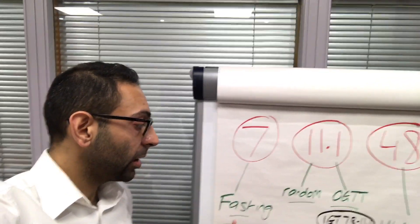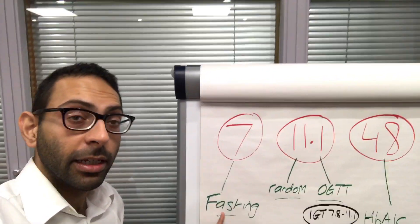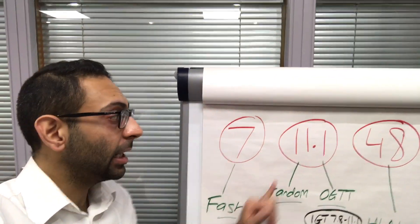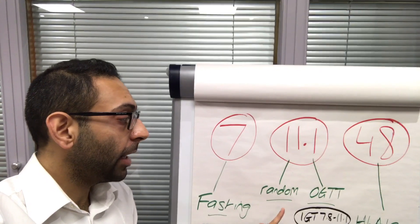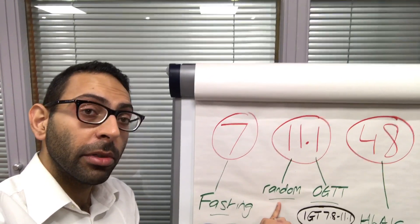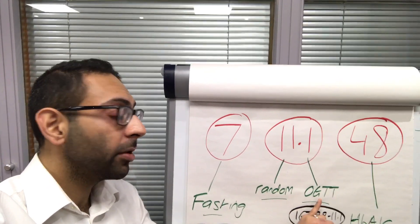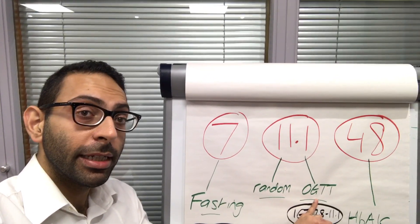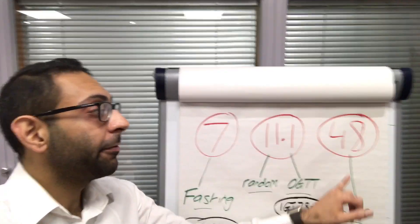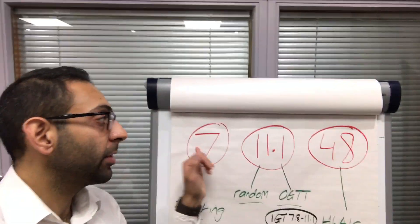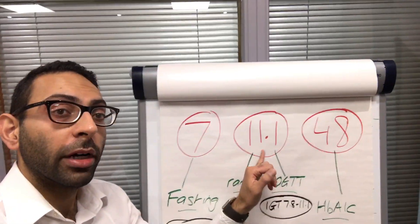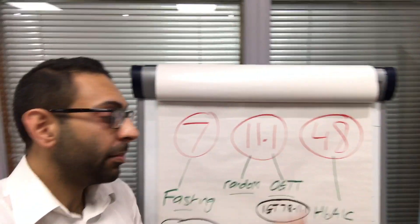So 7 is the number you're looking for with a fasting glucose. 11.1 is the number you're looking for at either a random glucose or a post-OGTT test. And 48 is your number that you're looking for in HbA1c. 7, 11.1, 48.